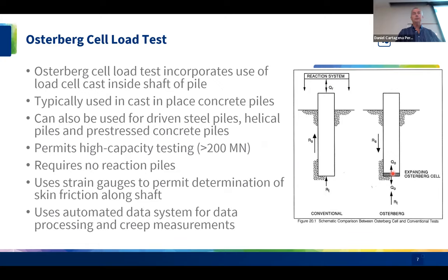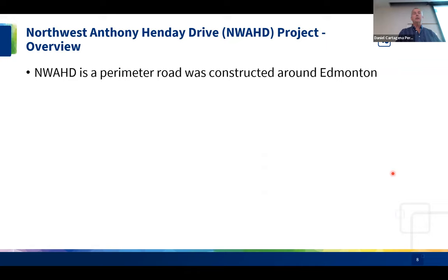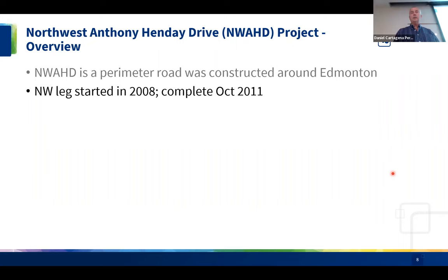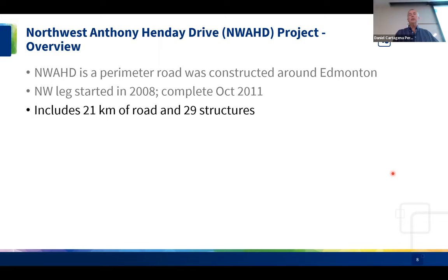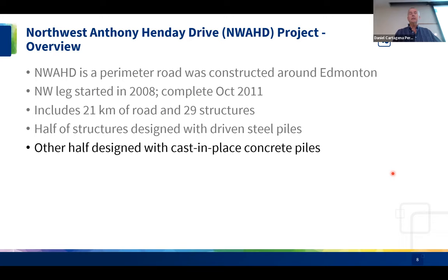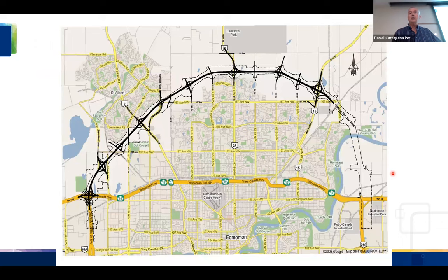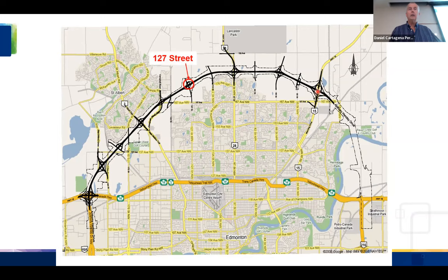An overview of the project: Northwest Anthony Henday Drive was being built at the time of these load tests. It's a perimeter road around Edmonton that started in 2008 and opened in the fall of 2011, including 21 kilometers of road and 21 different bridge structures. Half were designed with driven steel piles, half with cast-in-place concrete piles. Total project cost was 1.4 billion dollars. The two test sites were at 127th Street and Campbell Road.